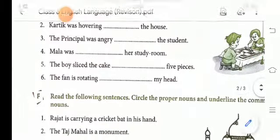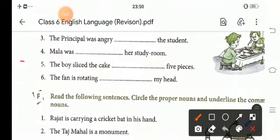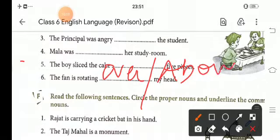The boy sliced the cake into five pieces. Then, the sixth one is, the fan is moving. Either you can write it over or above. The fan is rotating over my head. Or, you can write it, the fan is rotating above my head.